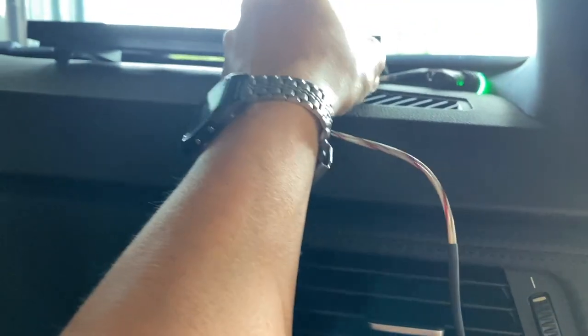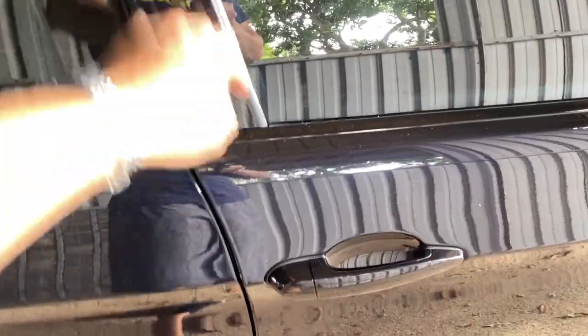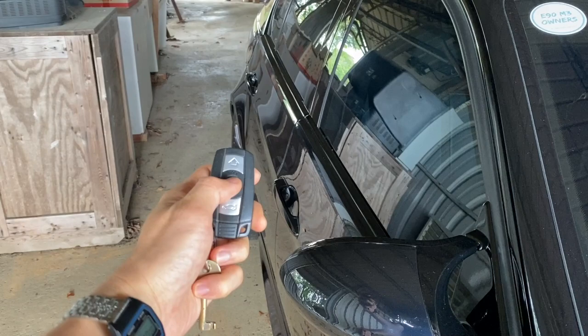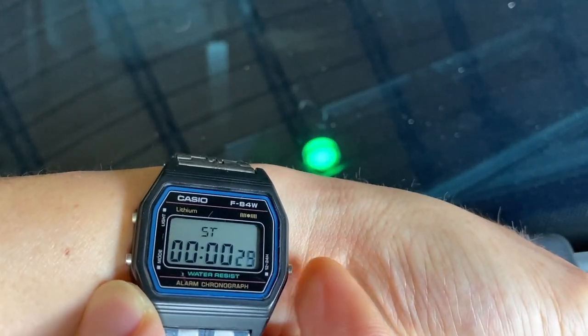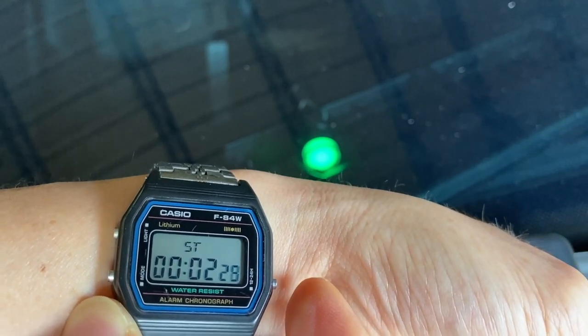And let's get out of the car. Make sure the door is firmly closed so the car can go to sleep. The door is closed and let's lock the car. And start the timer. Let's see if it shuts down in 30 minutes.